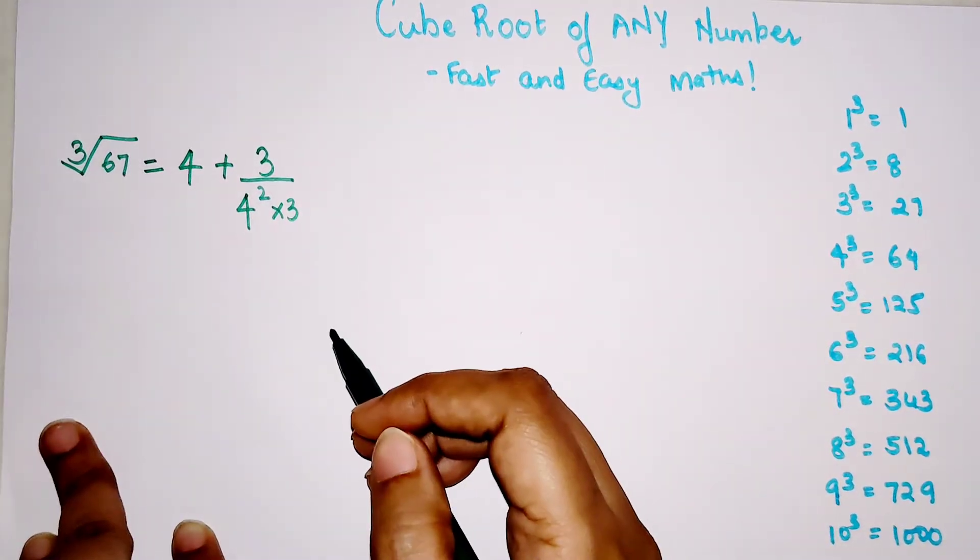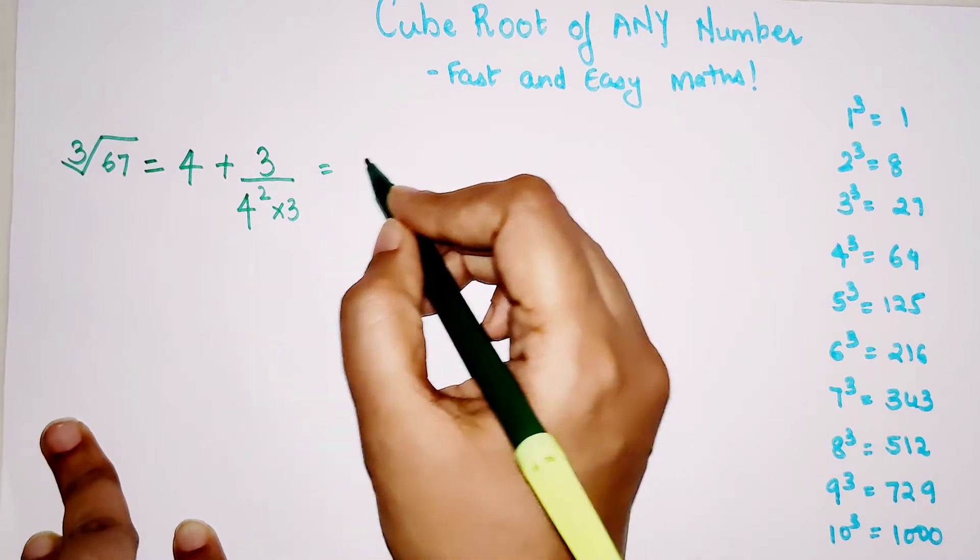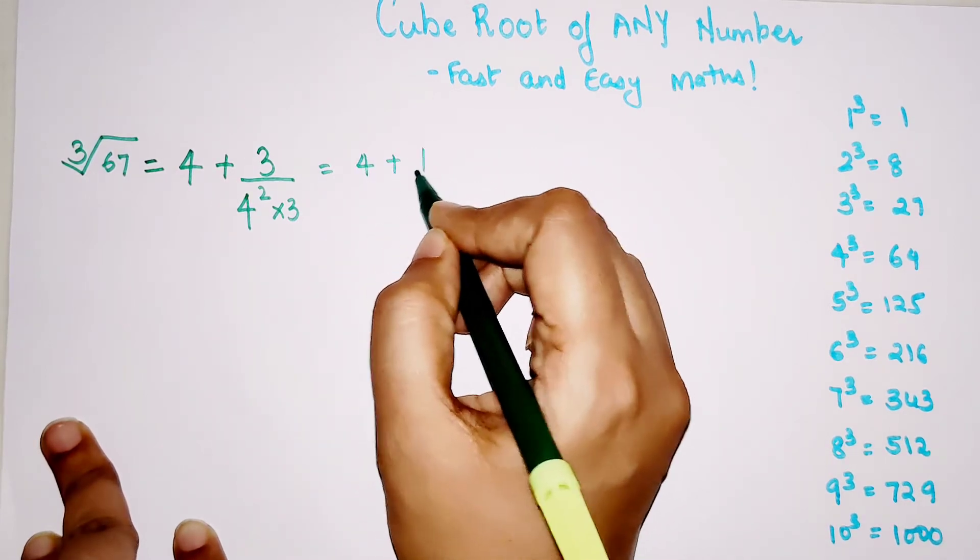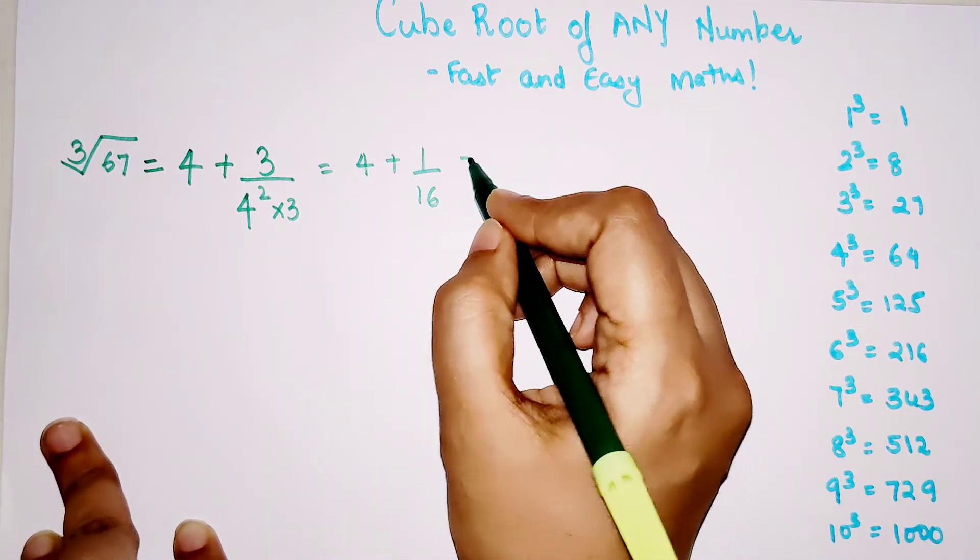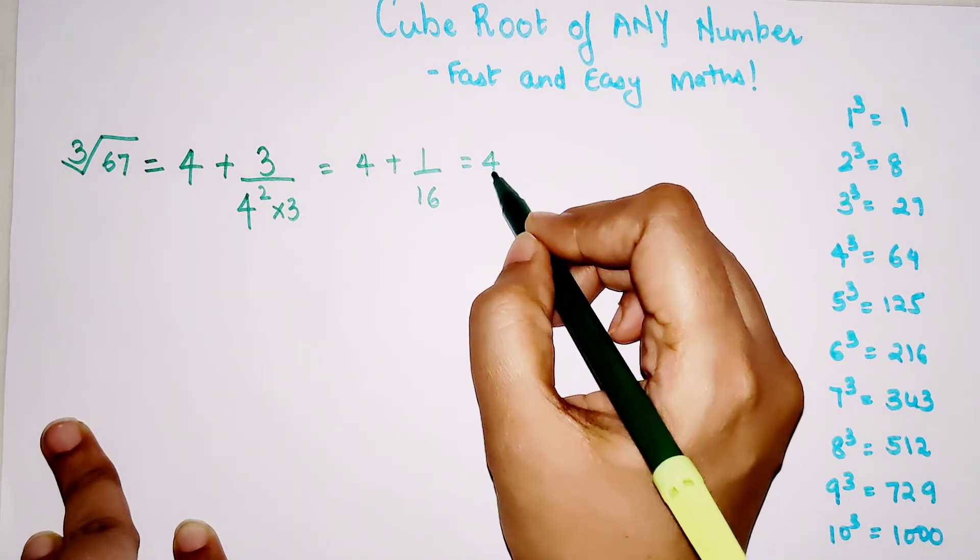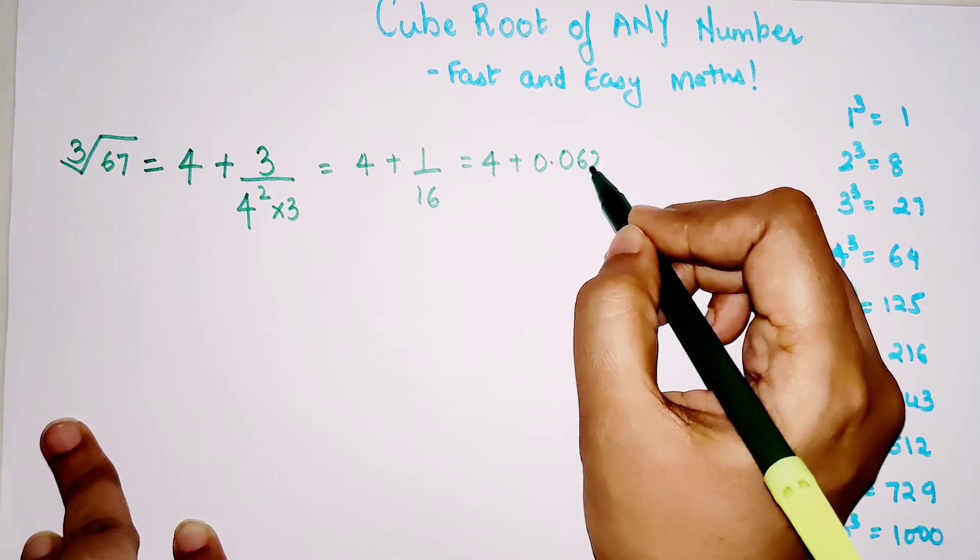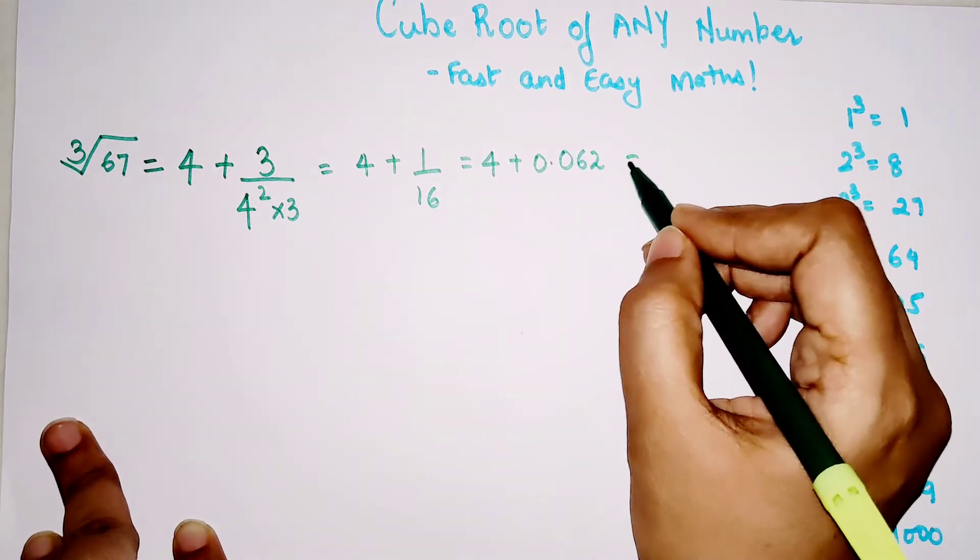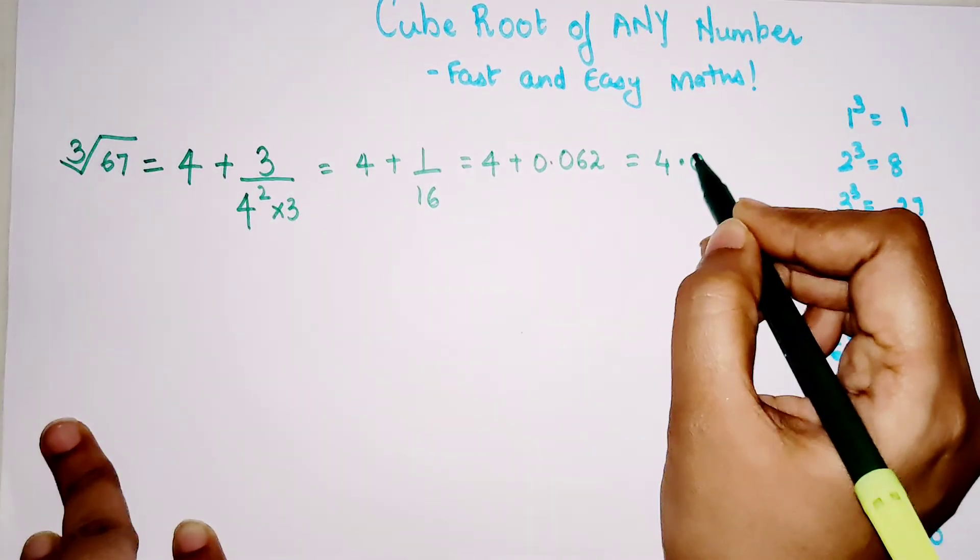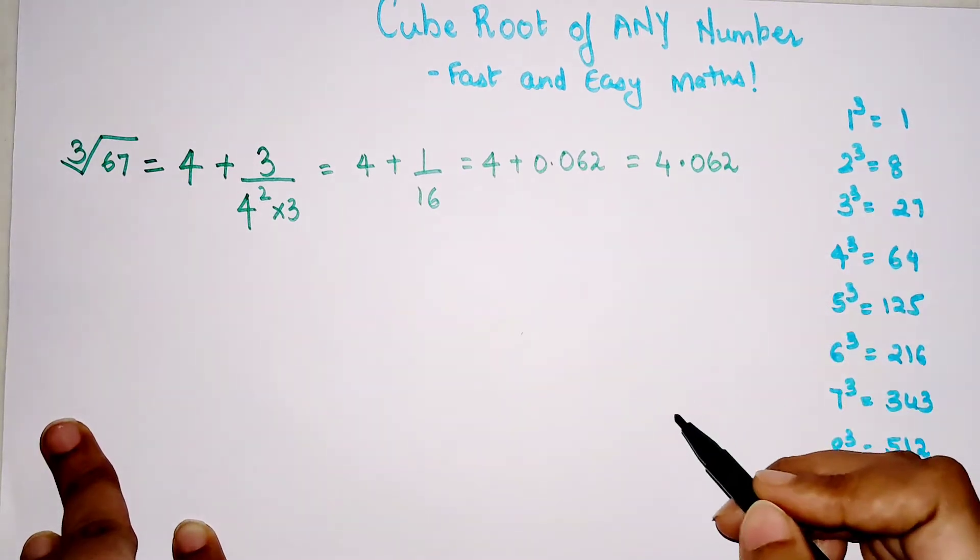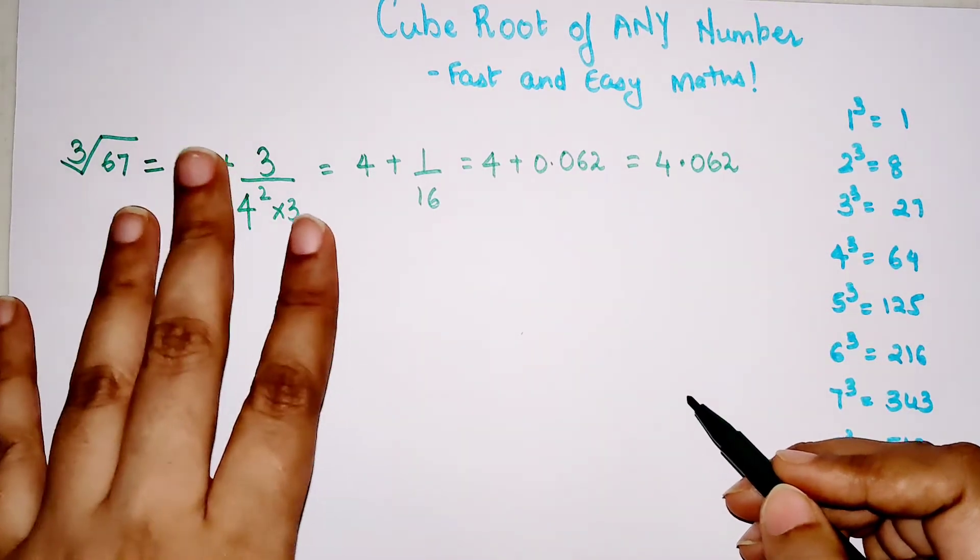This turns out to be 4 plus 1 upon 16, that comes to around 4 plus 0.062. So your final answer now changes to 4.062.